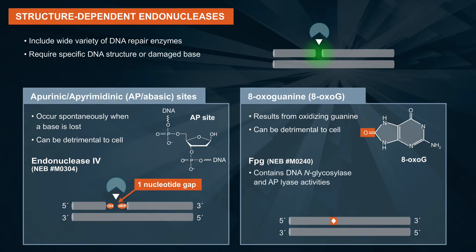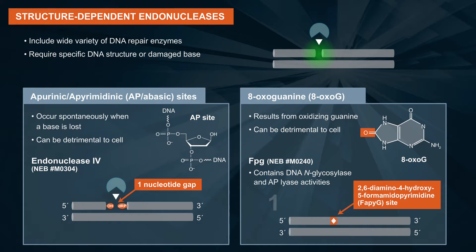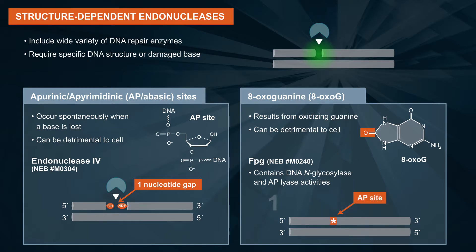FPG is a bifunctional DNA glycosylase with DNA N-glycosylase and AP lyase activities. The N-glycosylase activity releases damaged purines, including 2,6-diamino-4-hydroxy-5-formamidopyrimidine and 8-oxo-7,8-dihydroguanine, generating an AP site.